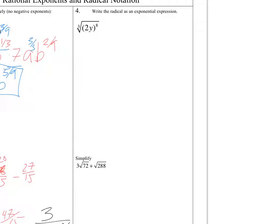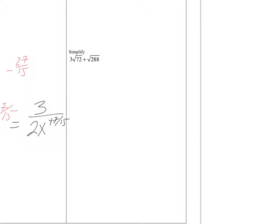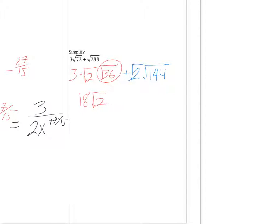On the easier side, we've got to write this as an exponential expression. I'm going to keep my base piece of 2Y and write this as a fraction 8 over 3 — the index always ends up in the denominator. And lastly, we're looking at trying to combine two things in radical notation. I'm going to try to write these square roots as perfect square factors. 72 — that's like 2 times 36. So square root of 2 times the square root of 36 — that's 6 there. 3 times 6 is 18, square root of 2. Then square root of 288 — that's 2 times 144. So square root of 2 times square root of 144, and square root of 144 is 12. Square root of 2 sticks around, and we end up with 30 square roots of 2.